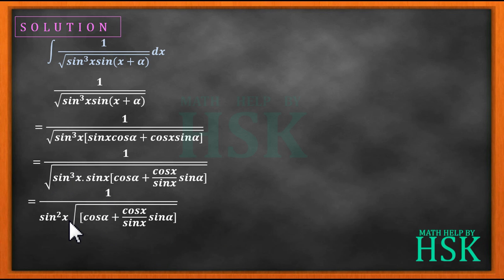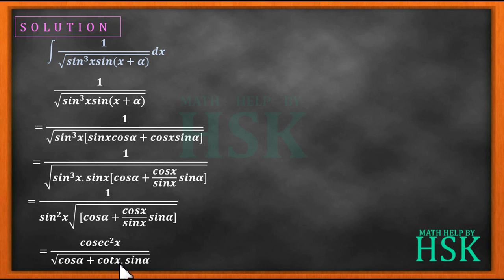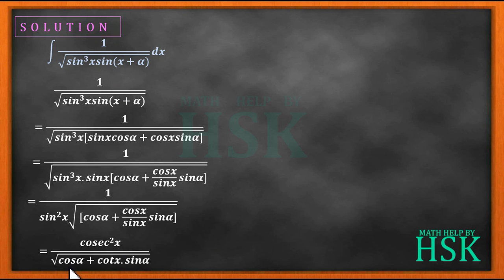And cos x / sin x in the next step can be written as cot x. So this simplifies to cosec²x upon square root of (cos α + cot x · sin α). Now cos α and sin α are constants, which is a very important benefit of this simplification.